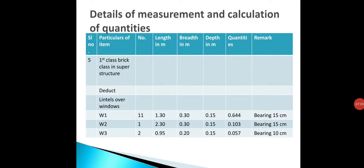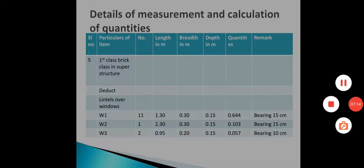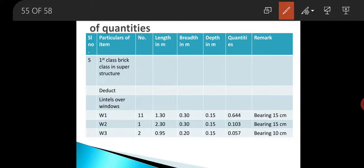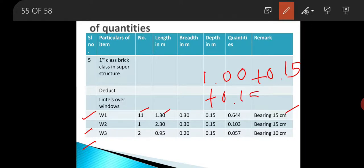Next we go for calculation of lintels over windows. For W1, there are 11 numbers of windows and the window opening is 1.0 m. In the remark column write 'bearing 15 cm.' Adding 0.15 on both sides gives a length of 1.3 m. Breadth is 0.3 m as this window is on a 30 cm wall, and depth is the lintel thickness of 0.15 m. Multiplying all these gives a quantity of 0.644 cubic meters.